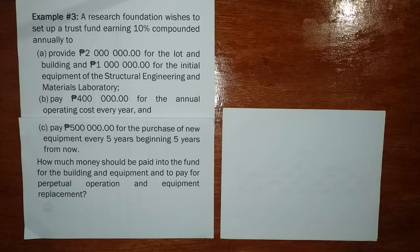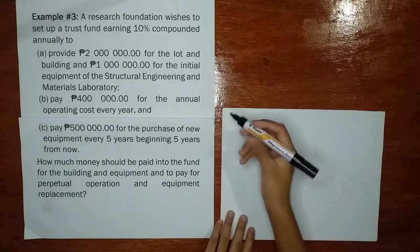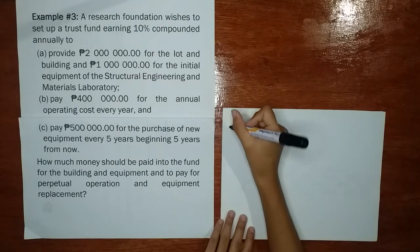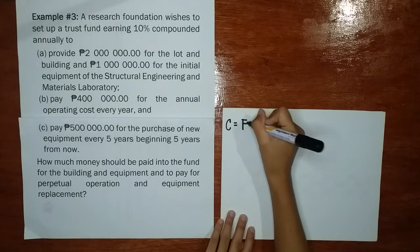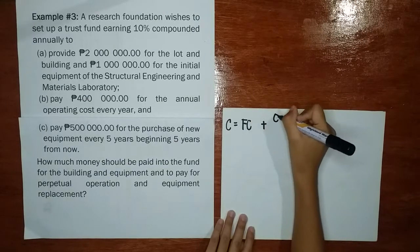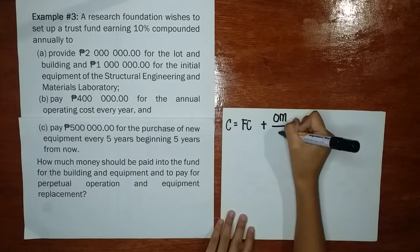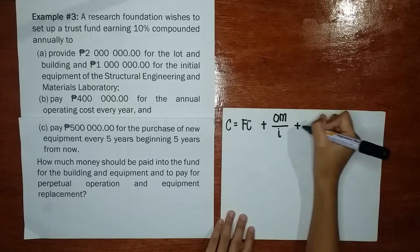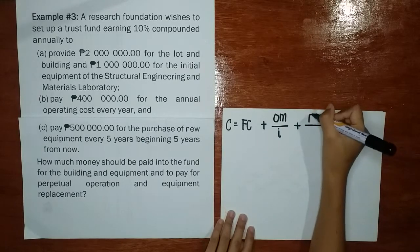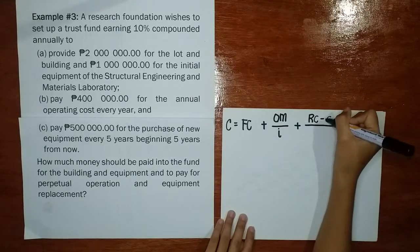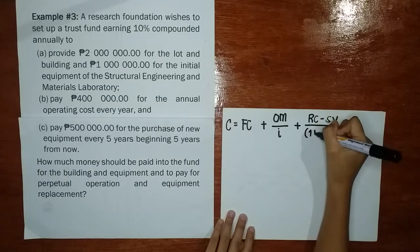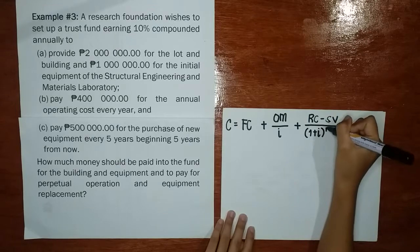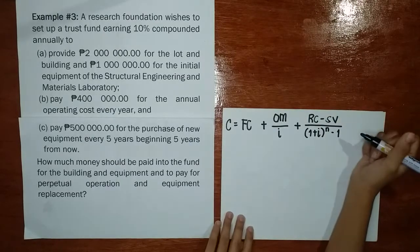Since we need the capitalized cost, we know the formula, which is: Capitalized Cost = First Cost plus OM over I, plus RC minus SV all over (1 plus I) raised to N minus 1.